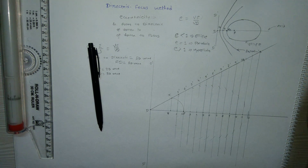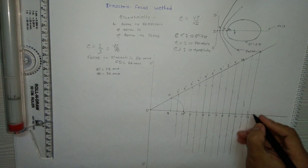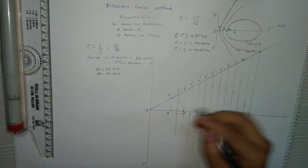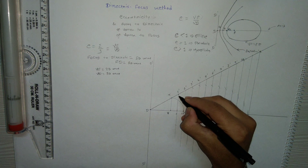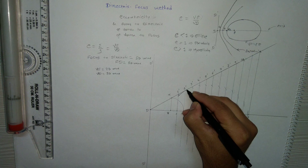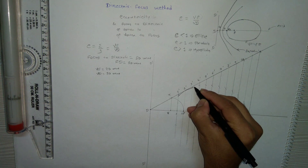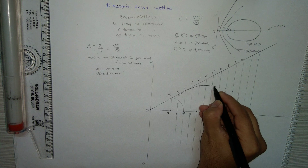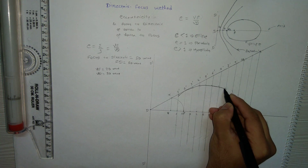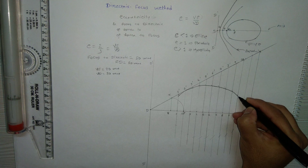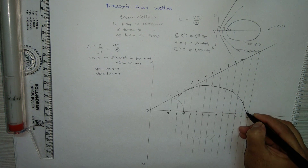Finally, we get all these points. Now connect them all with the help of a French curve or freehand sketch to get the required ellipse.